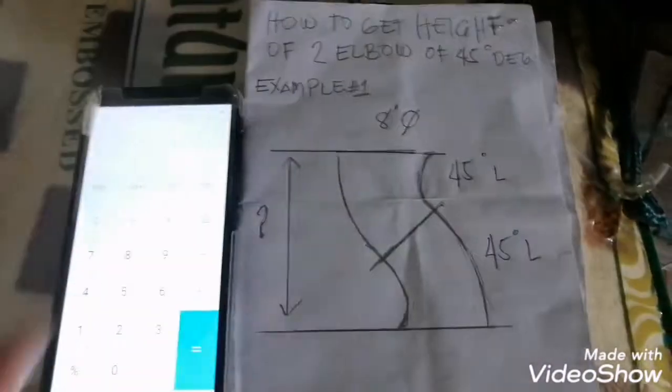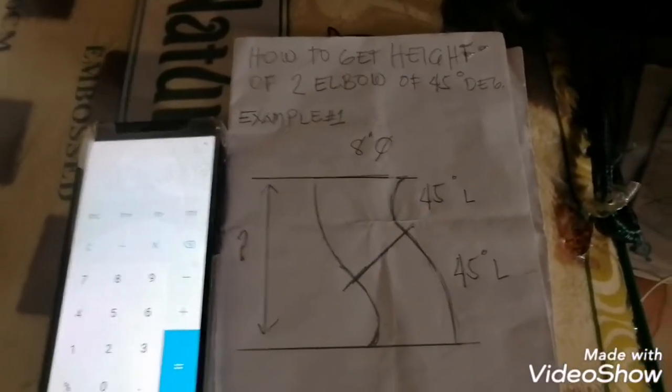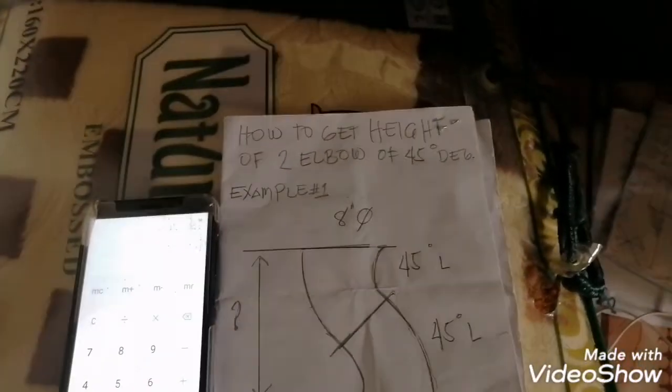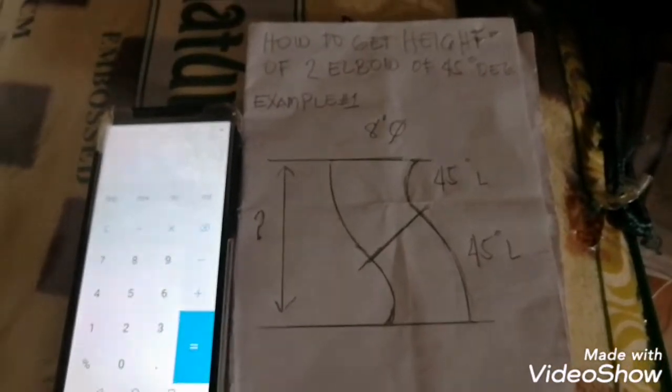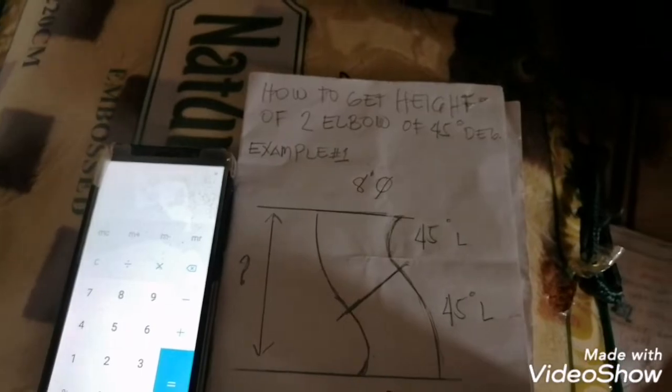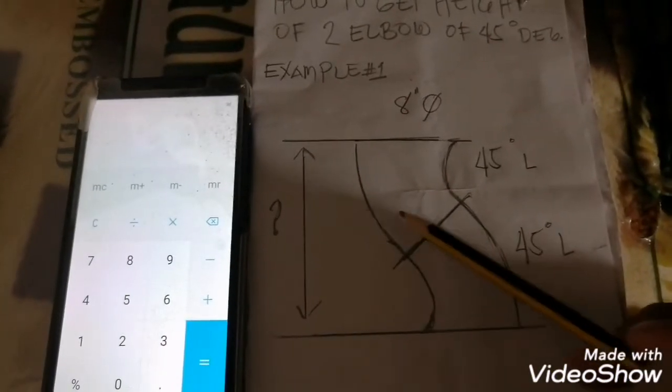This height, I'll show you how to get this height. Also, the constant of 45 degrees. We have two hypotenuse triangles of 45 degrees. Now, this is it. Now I'll show you the computation.